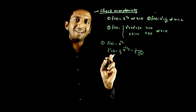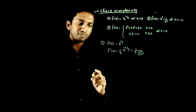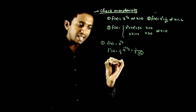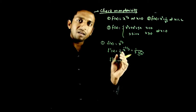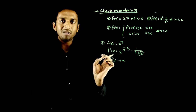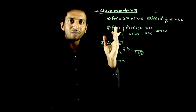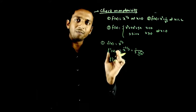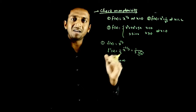Now we are asked to analyze the behavior of f(x) at x = 0. At x = 0, we have a 1/0 form, so f'(0) tends to infinity. The tangent at that point becomes vertical — when f' tends to infinity, the slope of the tangent is infinity, meaning the function has a vertical tangent.